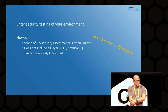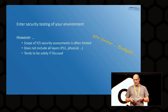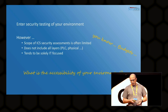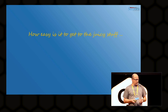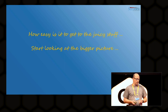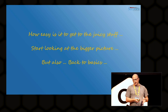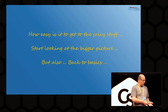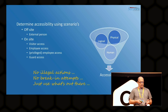Scoping of ICS security assessments is almost always limited. It tends to be IT-focused and does not always include all layers. The point is: do you know what the accessibility is of your environment? Do you know from what points somebody can enter your network or physical environment? You have to start looking at the bigger picture — not only the logical stuff, not only the human elements, not only the physical elements, but combine them all together and use scenarios to determine your security testing.